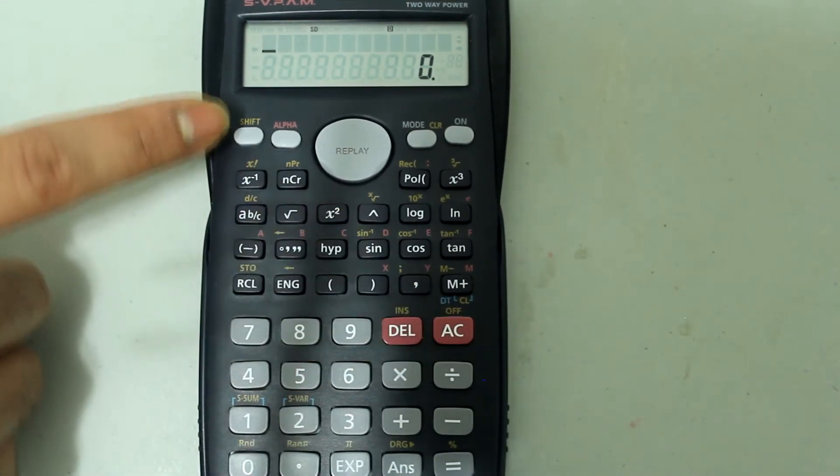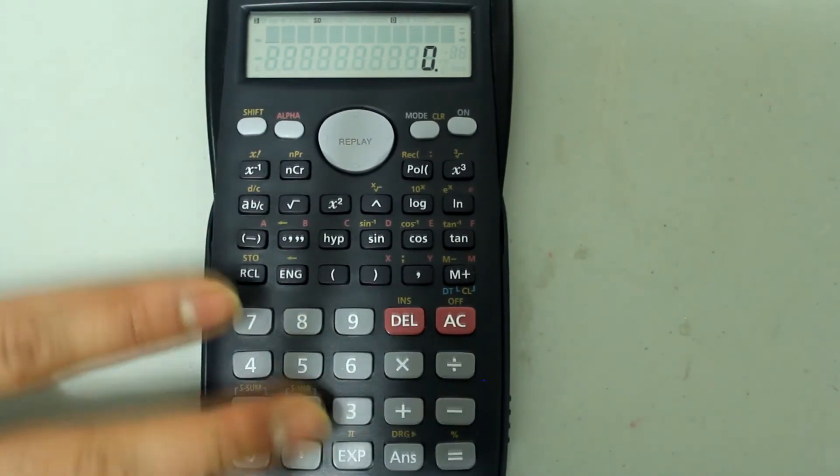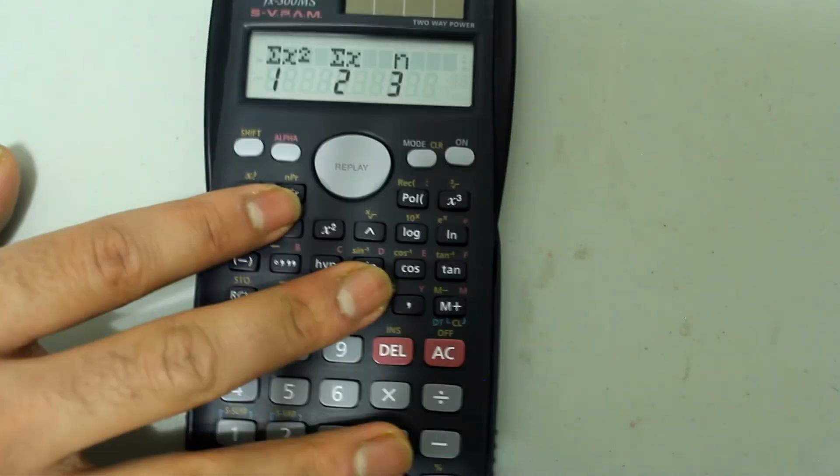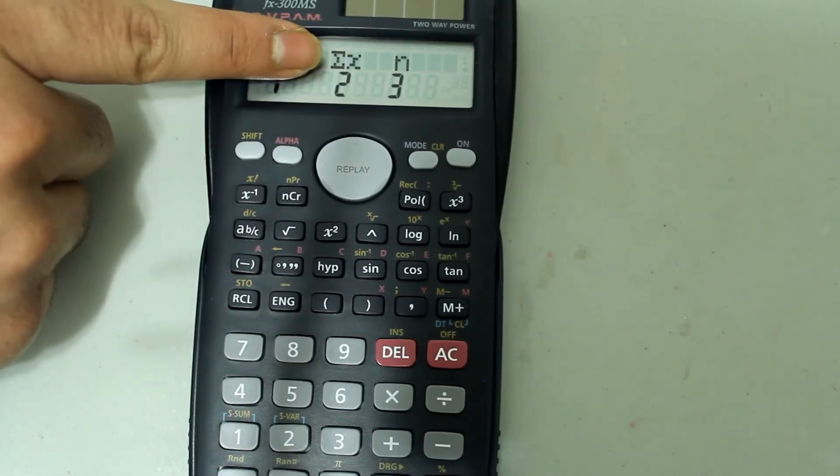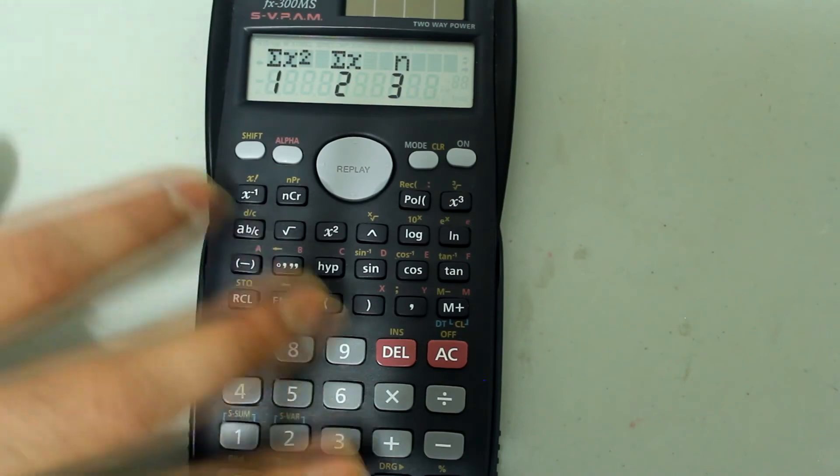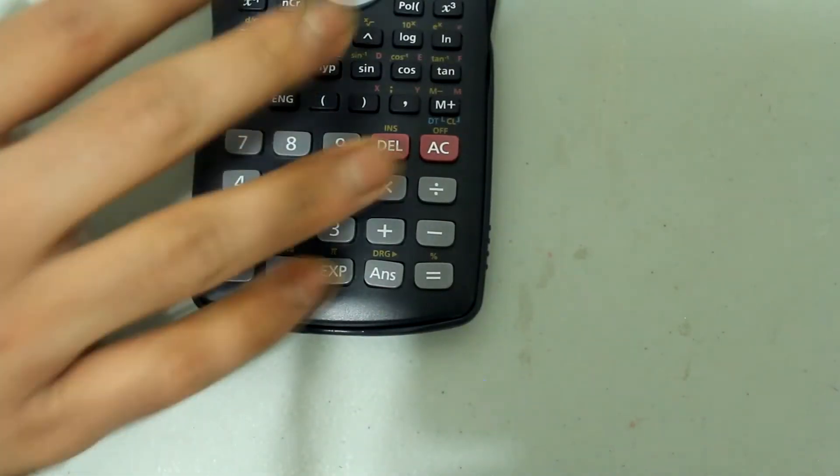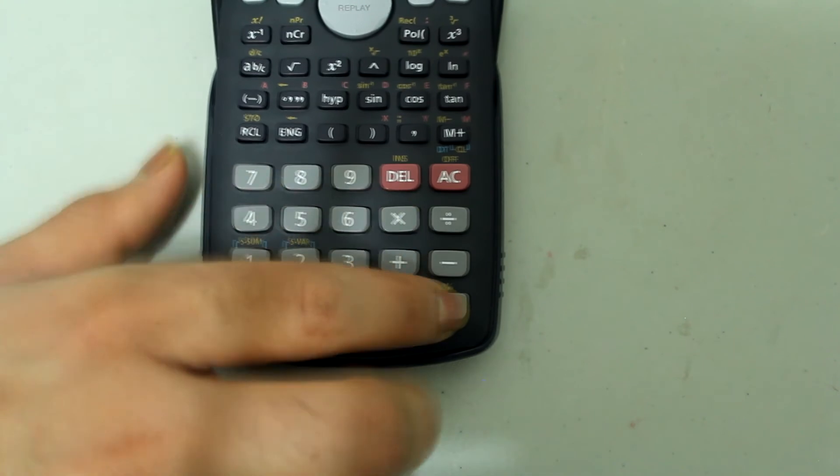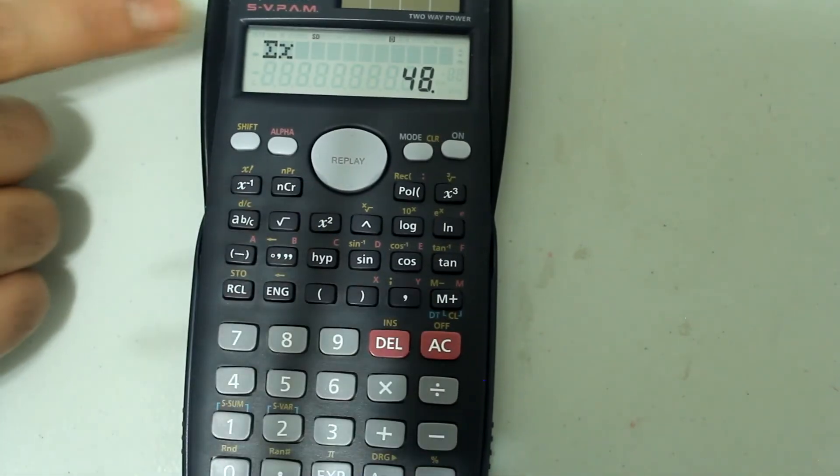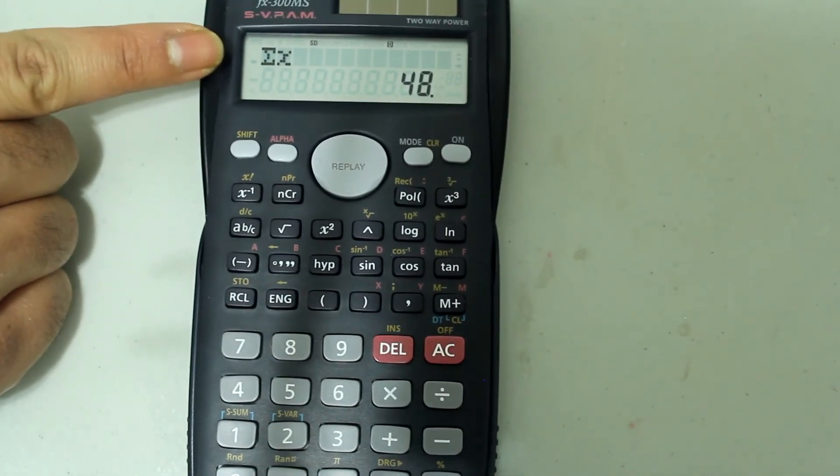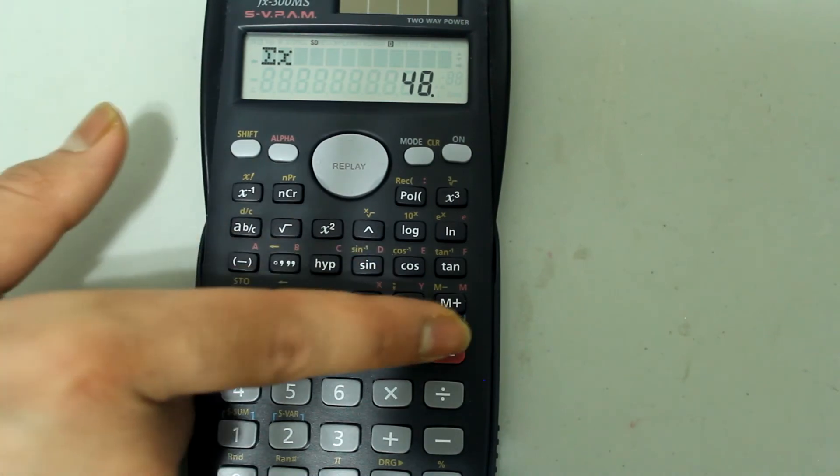So let's clear that. Go to shift and press 1 again. The next one is the sum of the numbers in the data set. So press 2 and this comes up. Press enter and this is the sum of the numbers in the data set.